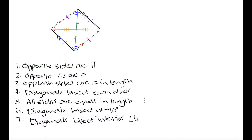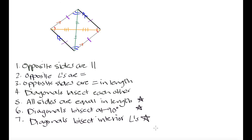To summarize, I'm putting a star next to the three properties specific to the rhombus: all sides are equal in length, the diagonals bisect at 90 degrees, and the diagonals bisect the interior angles. Properties one through four apply to all parallelograms, while these three starred properties differentiate the rhombus from other types of parallelograms, such as rectangles.